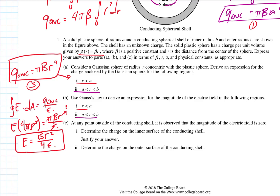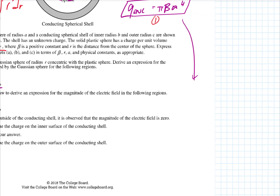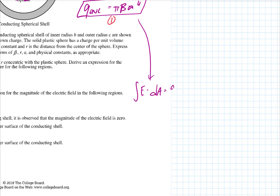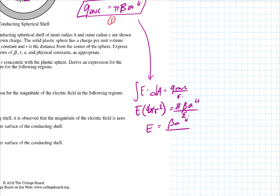For the in-between space, we use the same Gauss's law setup: E·dA equals q enclosed over ε₀. The left side stays the same — E times 4πr² — but q enclosed this time is πβA⁴ over ε₀. So the electric field in that region is βA⁴ over 4ε₀r², which decreases as 1/r².